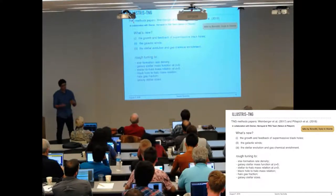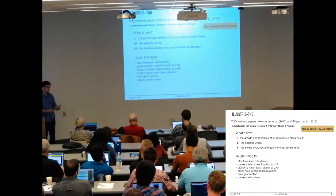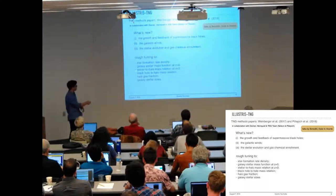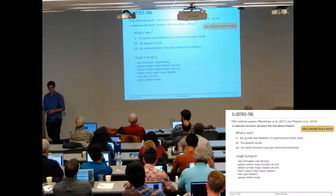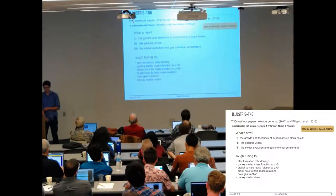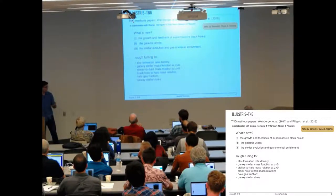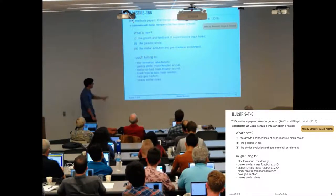Some observations have been used to tune these simulations, including star formation rate density, the stellar mass functions at redshift zero, the stellar-to-halo mass relation, the black hole to halo mass relation, and the halo gas fraction — and importantly for this talk, the galaxy sizes. But what has not been tuned to is morphology. Today I will focus on the kinematic part of morphology, looking at the spheroid-to-total ratio.